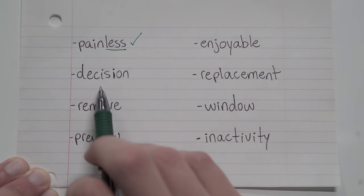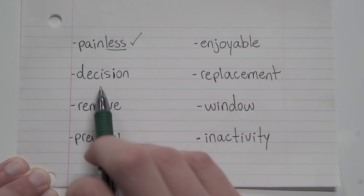Moving on to decision. Well, what is our base word of decision? What word does the word decision come from? Answer is decide. But that base word has been cut off and changed a little bit, and that's because of the suffix i-o-n.